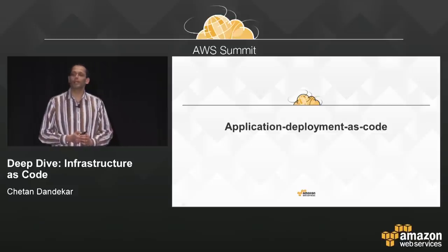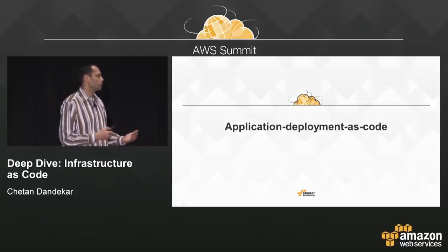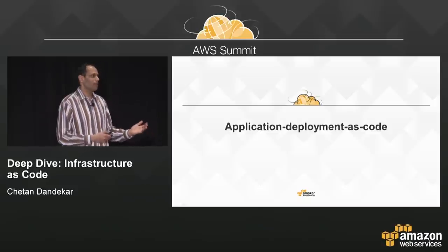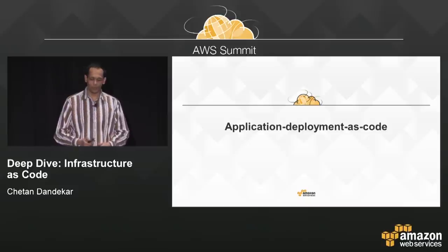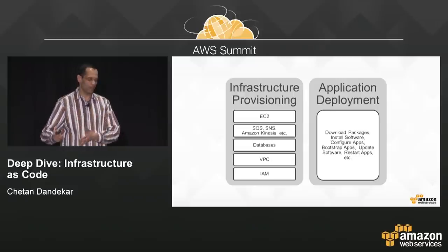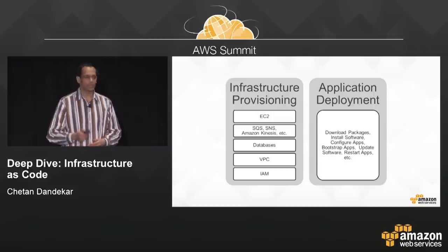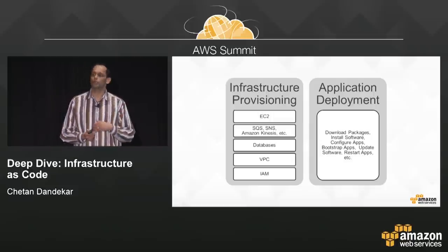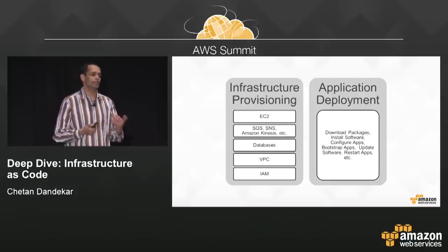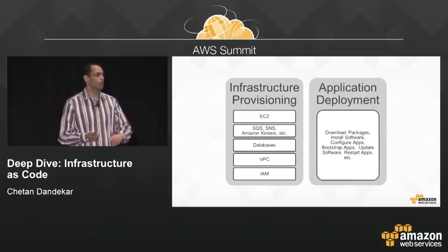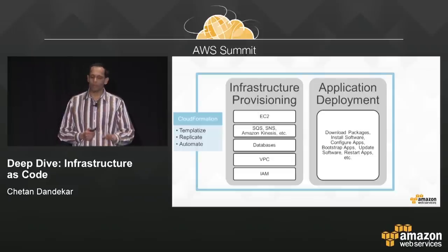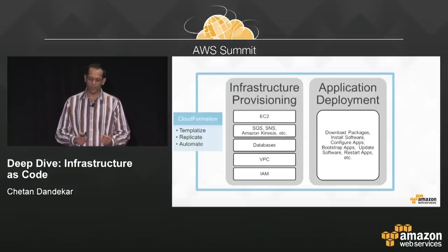Infrastructure provisioning goes hand in hand with application deployment. If you automate infrastructure provisioning, it's only useful if you can also automate application deployment. Infrastructure provisioning covers things like networking, queues, and Kinesis streams. Application deployment covers downloading packages onto EC2 servers, installing them, bootstrapping the application, and so on. You can model all of this in a CloudFormation template and automate it.